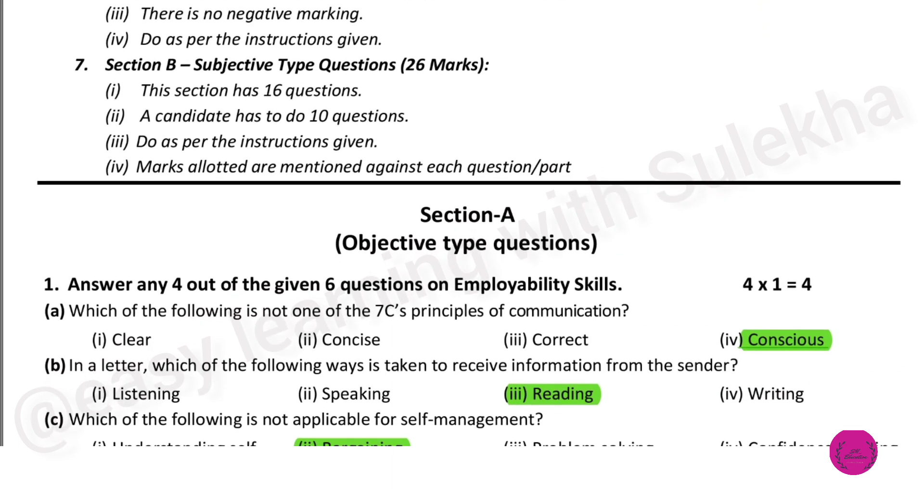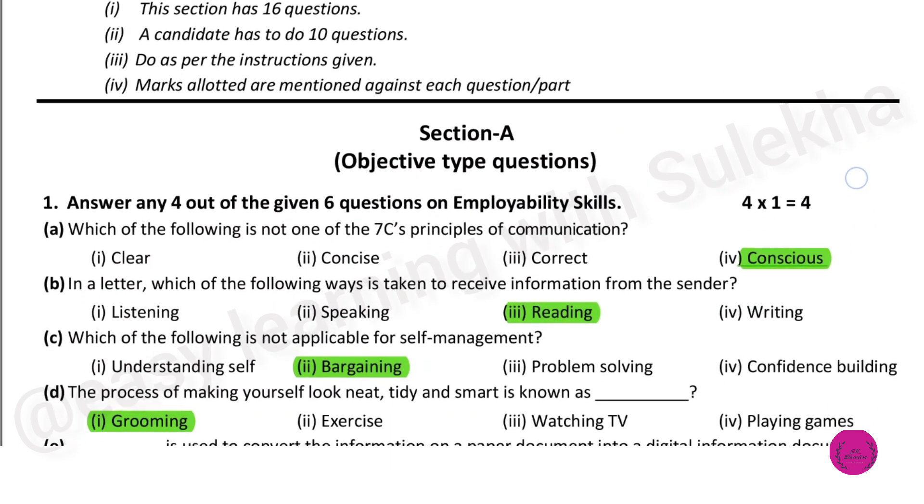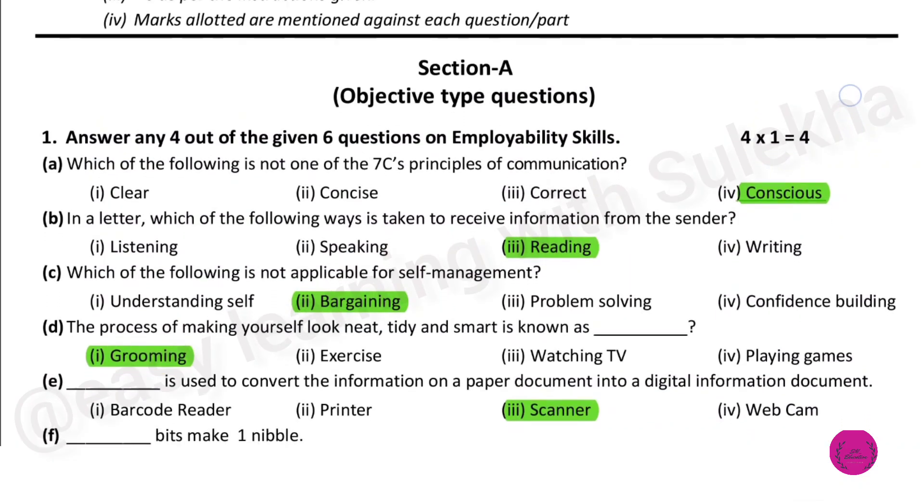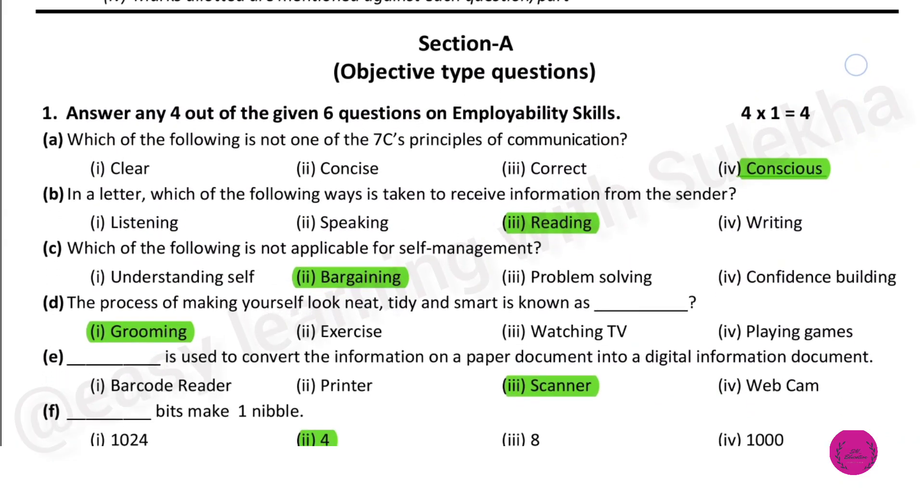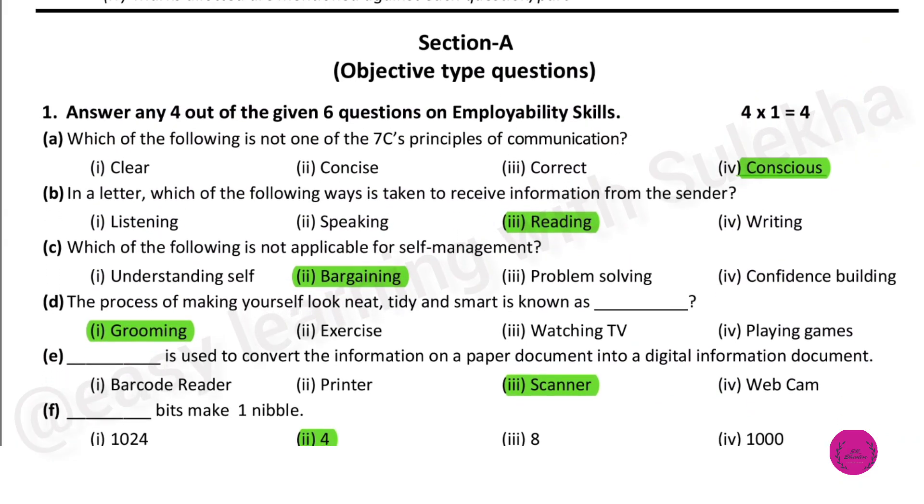The first question: which of the following is not one of the 7C principles of communication? The answer is conscious. In a letter, which of the following ways is taken to receive information from sender? That is reading.